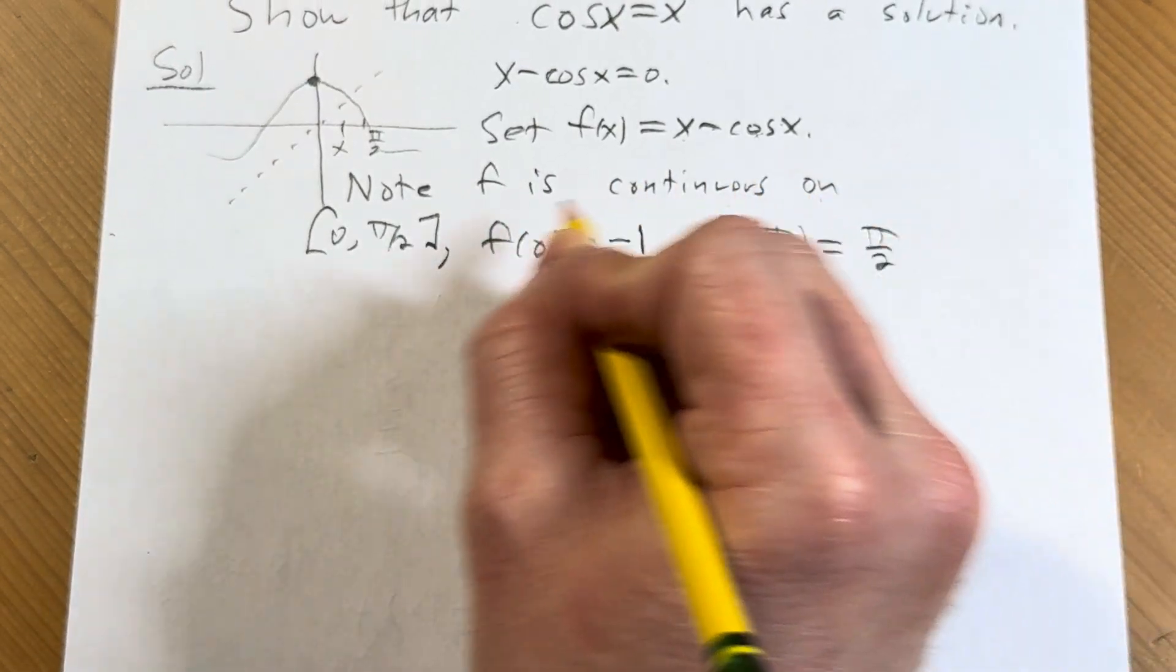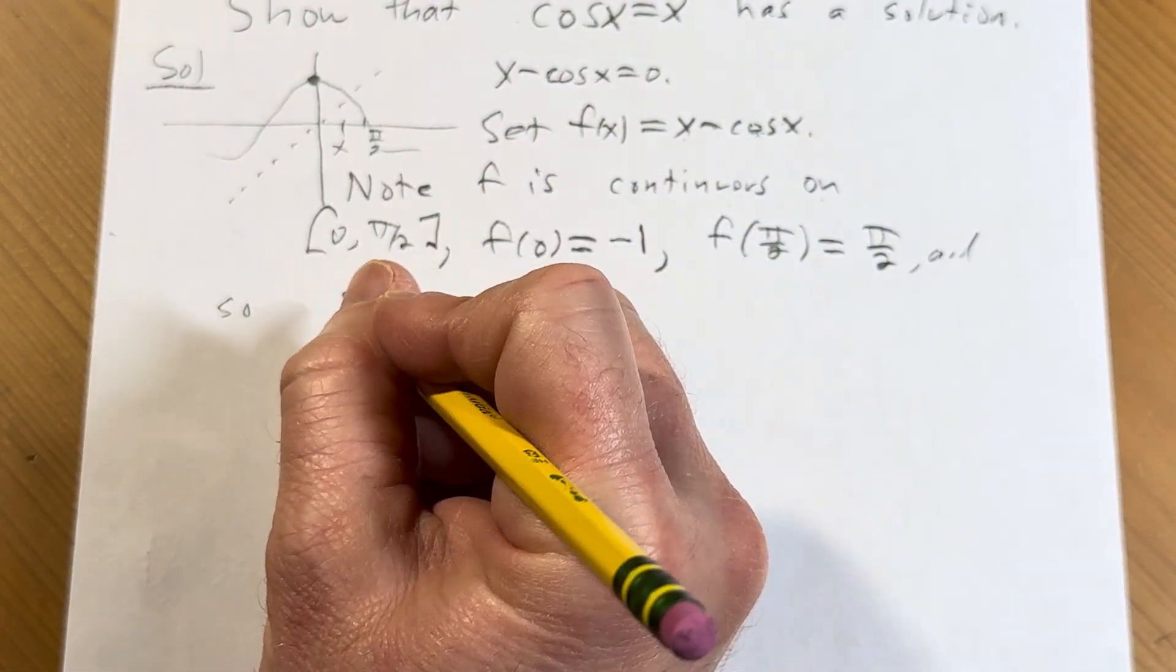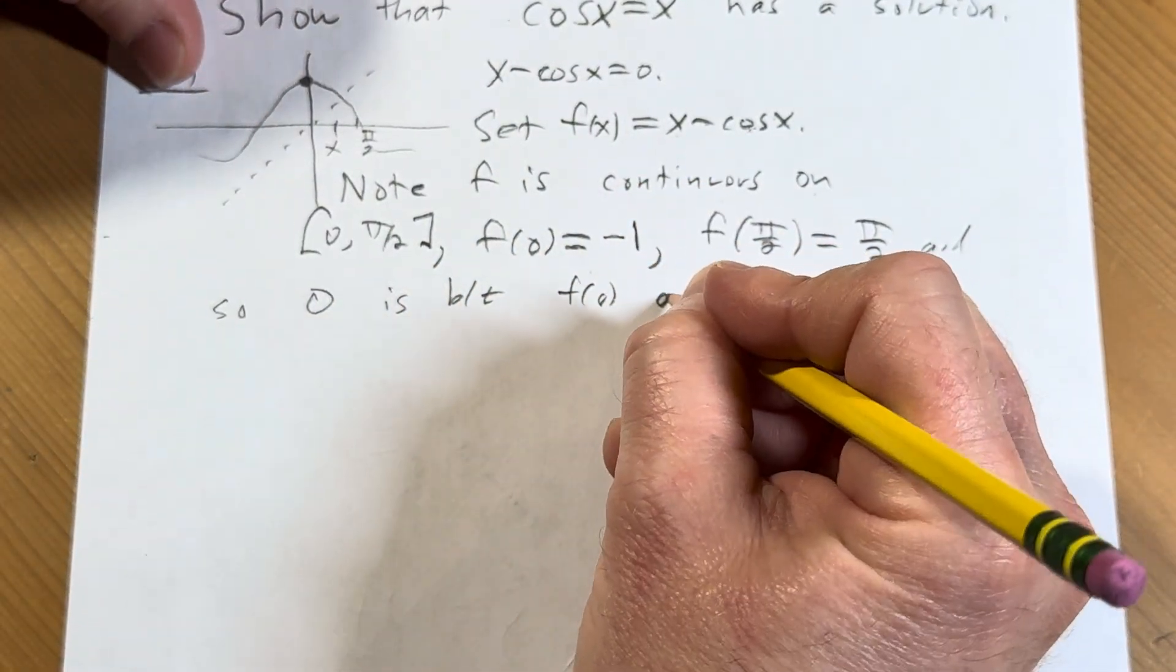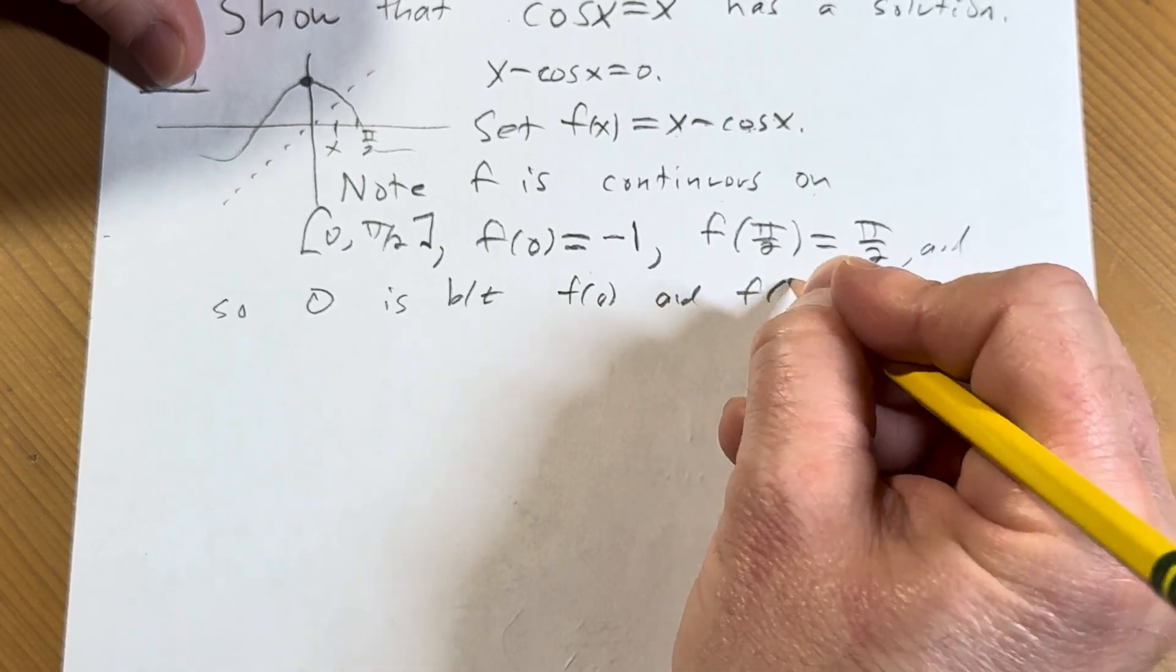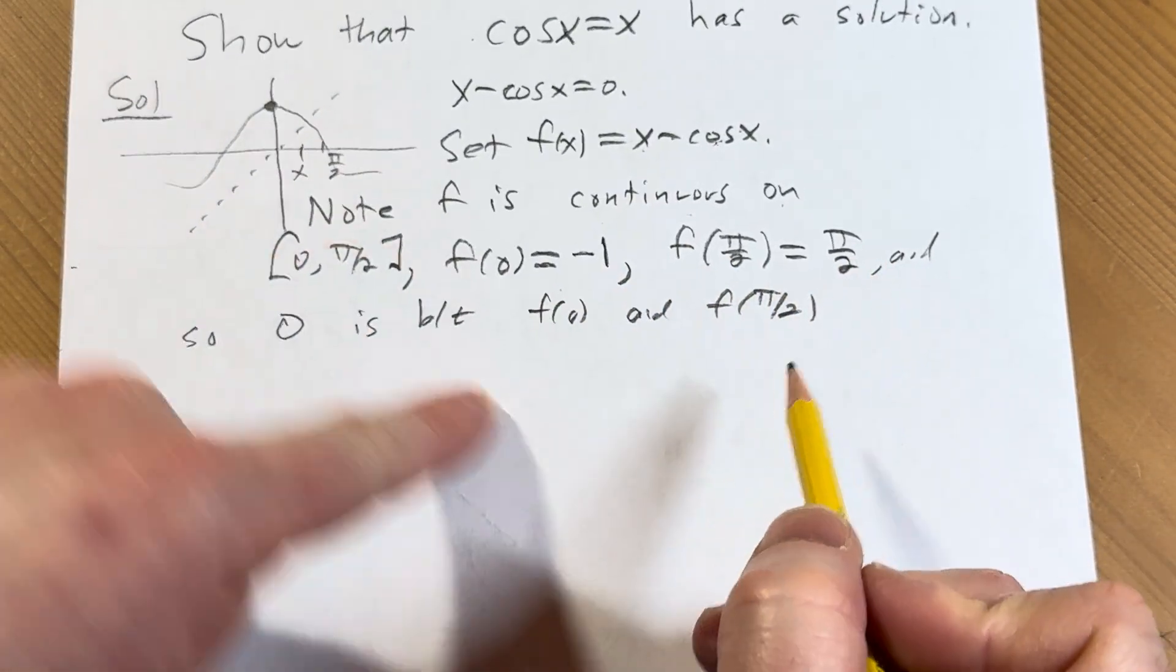So now f is continuous here, and so 0 is between f of 0 and f of pi over 2, right? It's between these numbers, negative 1 and pi over 2.